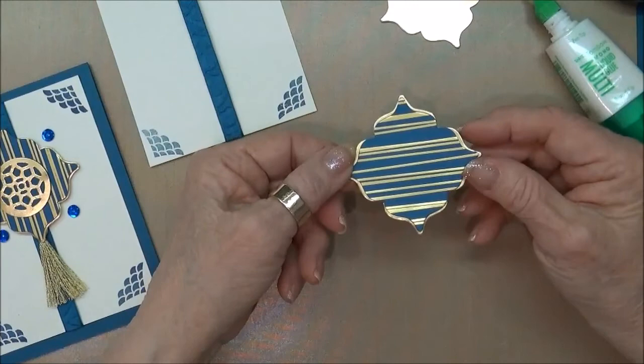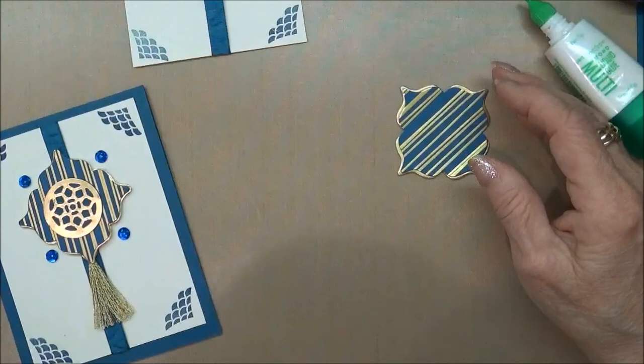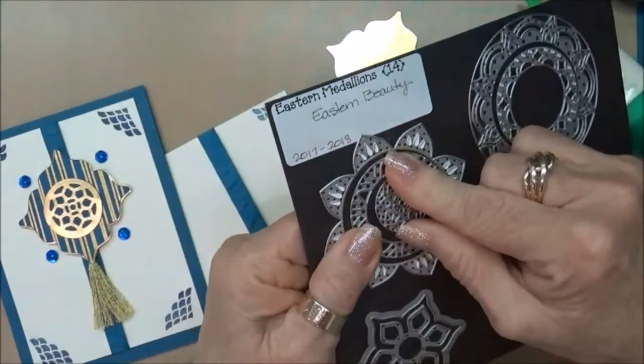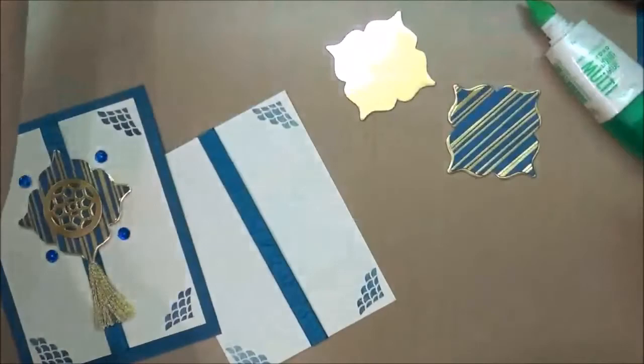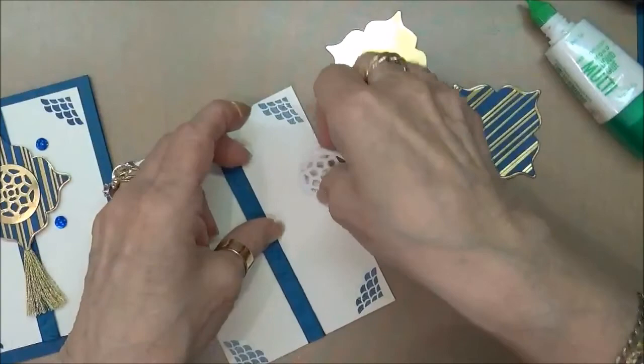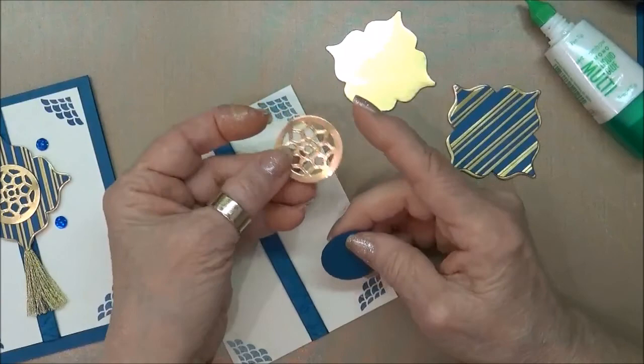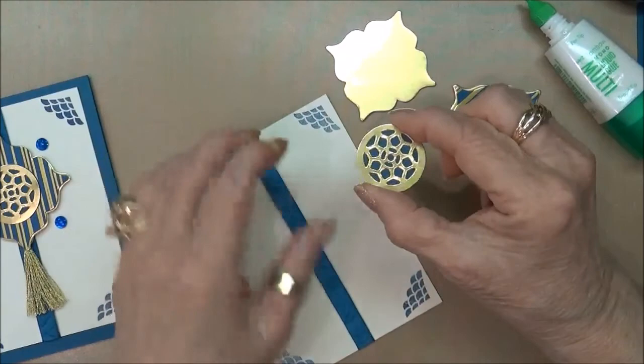I'm going to let that dry for a second. Previously, using this circle die right here—it's kind of hard to see the design—I punched it out of the gold foil paper just like we did the other. Then I took my dapper denim and my inch and a quarter circle punch and punched out a circle. I also punched this out with a circle so that they will be able to be mounted on top of each other.